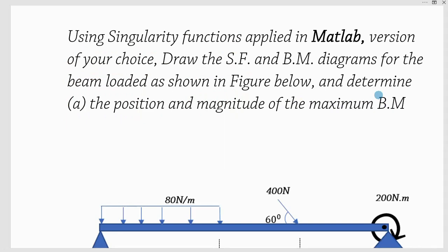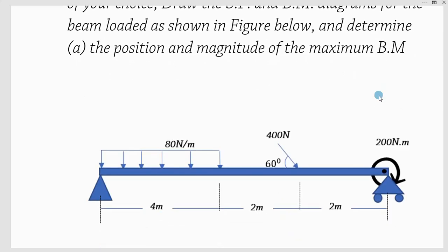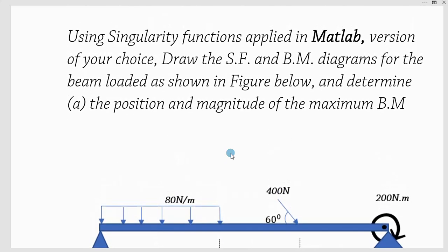Hello everyone. In this video we are once again looking at another example of drawing the shear force and bending moment diagrams on a beam that has a point load, a concentrated moment, and a uniformly distributed load with two supports: a roller support and a pin support. It is specifically a statically determinate beam.